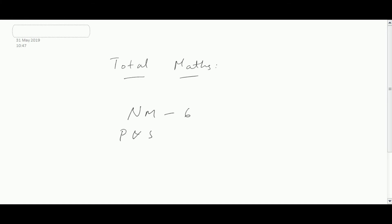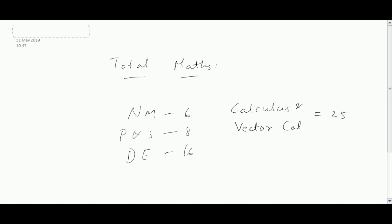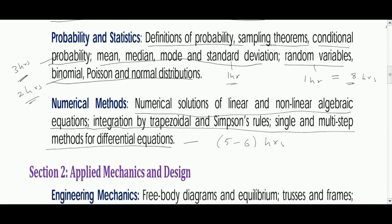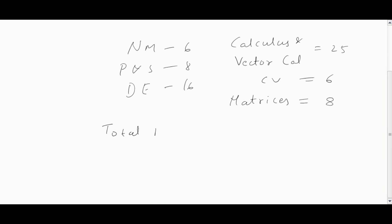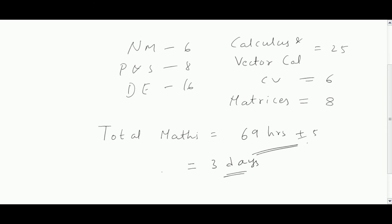Complex Variables six hours, Matrices eight hours — so on the whole it will take around 70 hours to complete Engineering Mathematics with good understanding. Engineering Mathematics covers around 13 marks in the GATE examination. If you sit for 24 hours a day you could finish in three days, but on an average, if you sit for around three to six hours a day, it will take around 15 days to complete Engineering Mathematics.